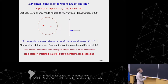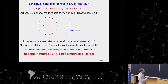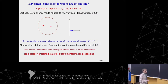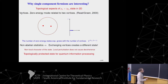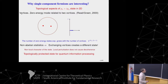Since I raise this question, you realize that perhaps there is something behind it. I would like to go back to the work of Read and Green in 2000. If I create vortices, then the zero energy mode related to two vortices is very important. The number of zero energy states exponentially grows with the number of vortices. What you get in the system is non-Abelian statistics. Exchanging vortices creates a different state; we have a non-local character of the state, and local perturbation does not destroy the coherence. This is interesting because of topologically protected quantum information processing.